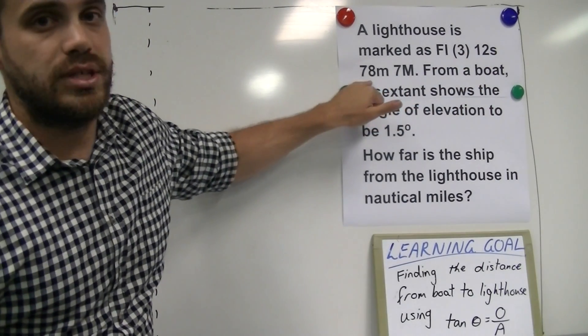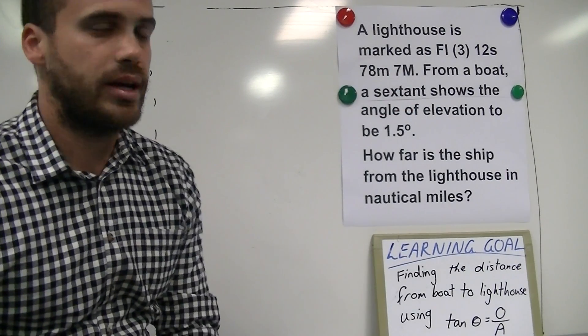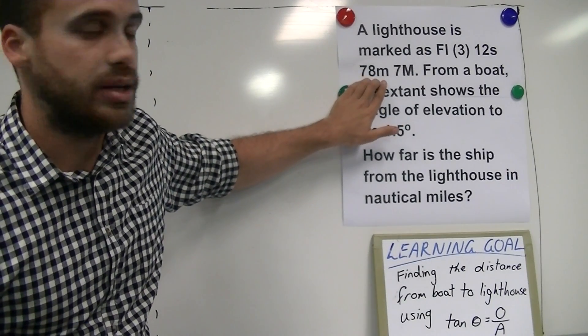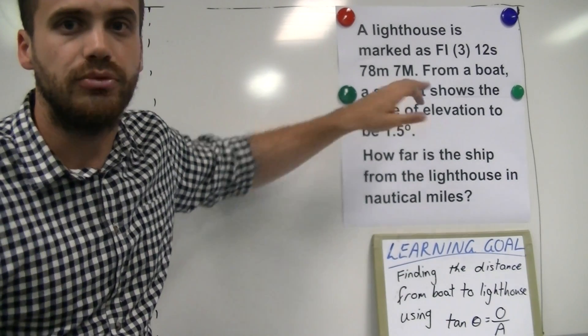Now this 78 metres is the thing we're interested in. We're interested in the lighthouse having a height of 78 metres. This last part here, 7M, refers to the visibility so you really don't need that bit.